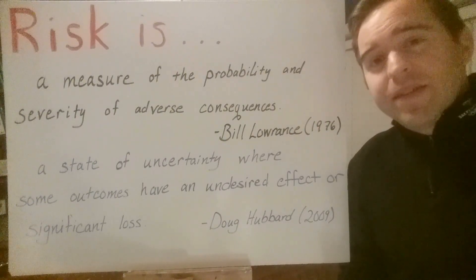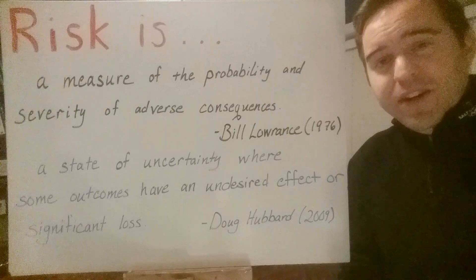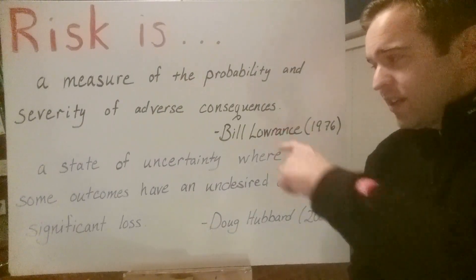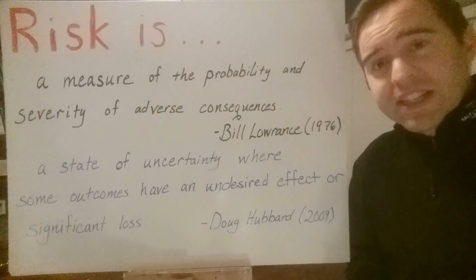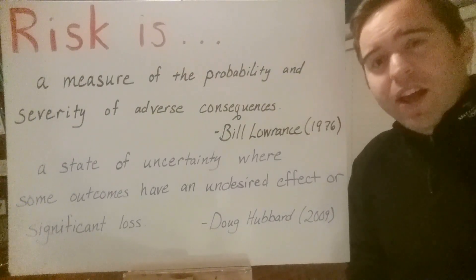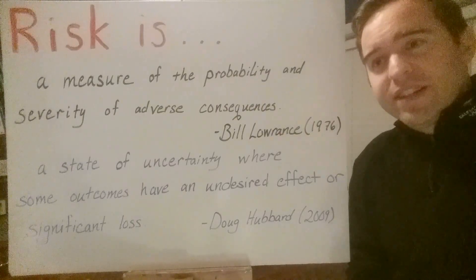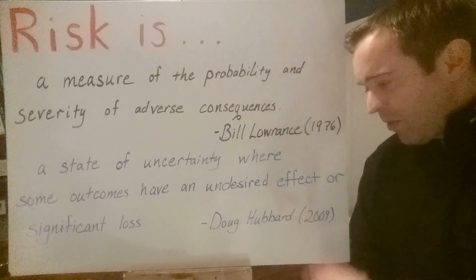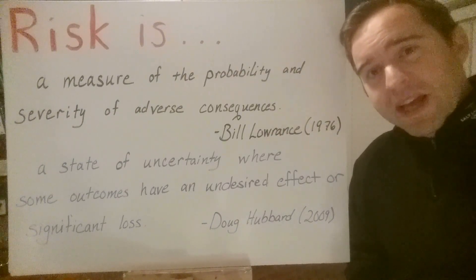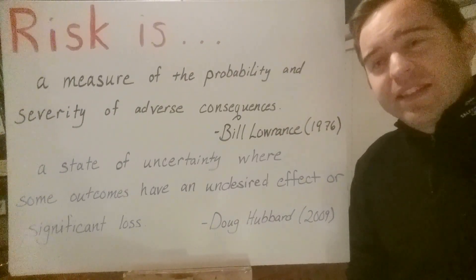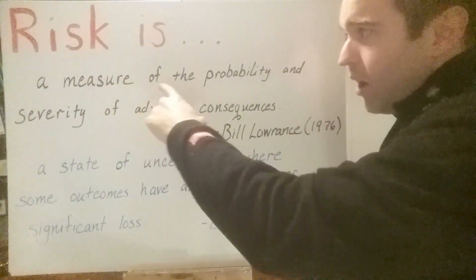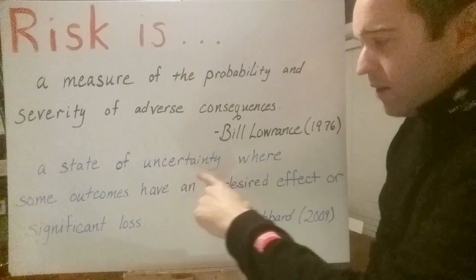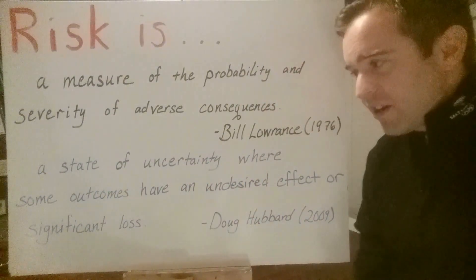Here are two definitions that are widely cited in the literature. The first is by Bill Lawrence in his 1976 book Acceptable Risk, focused on health, safety, and toxicology, and widely used as the foundation for modern risk analysis. The second is from Doug Hubbard's 2009 book, Failure of Risk Management and How to Fix It. Lawrence: 'Risk is a measure of the probability and severity of adverse consequences.' Hubbard: 'Risk is a state of uncertainty where outcomes have an undesired effect or significant loss.'